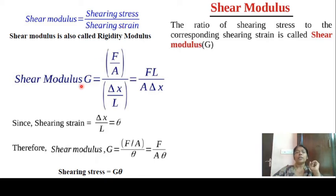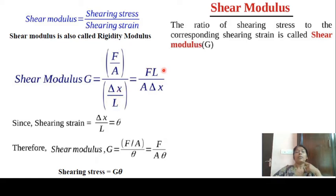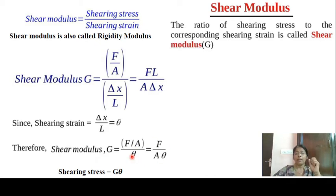The shear modulus G is equal to shearing stress F/A divided by shearing strain θ, where θ equals δx/δL. Rearranging gives G = FL/(A·δx). You can also write it as G = (F/A) divided by θ.